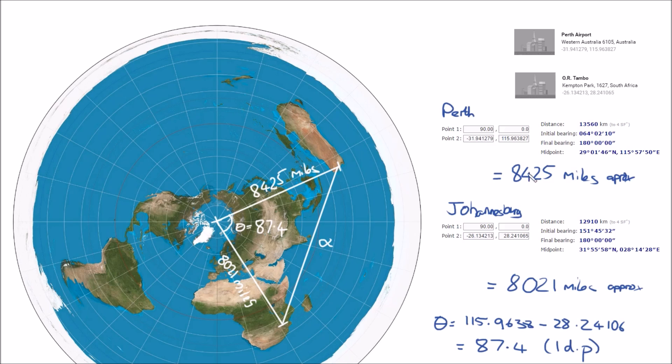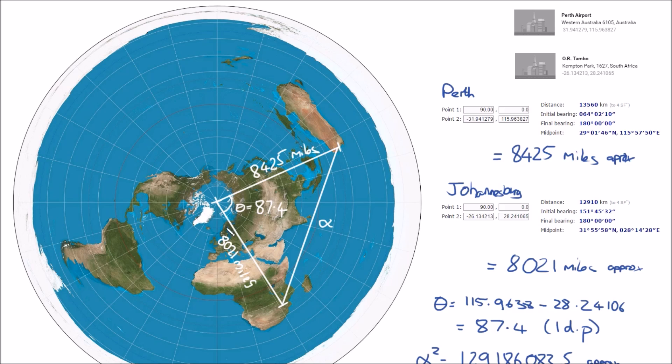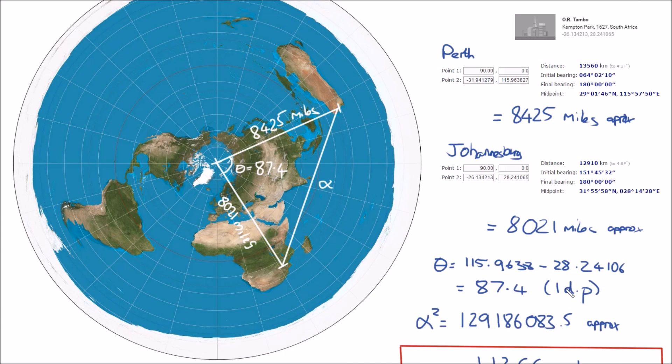So I've labeled that in this diagram here. So we know the distance from the North Pole to Perth is 8,425 miles, and the distance from the North Pole to Johannesburg is 8,021 miles. I have subtracted the longitudes to give the angle between the two points, so this angle theta here is 115.94 minus 28.24, which gives us 87.4. Let's move on—87.4 approximately, that is the angle in degrees.